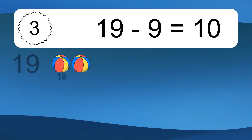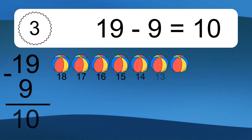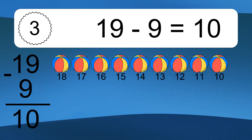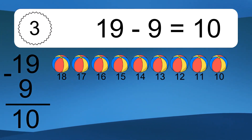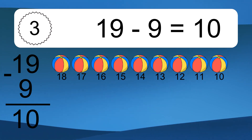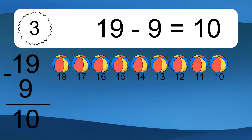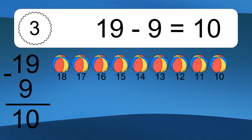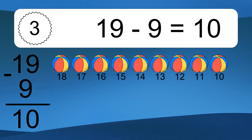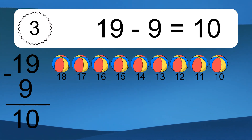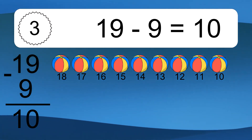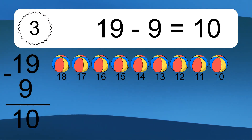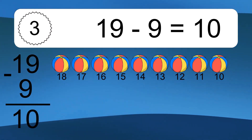19 minus 9 equals 10. Let's count it: 18, 17, 16, 15, 14, 13, 12, 11, 10.